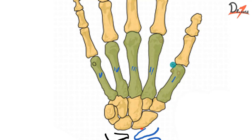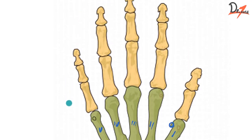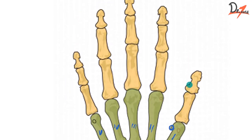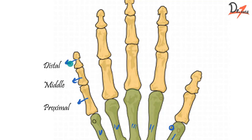Here you can see a little nodular bone — that is the sesamoid bone. The sesamoid bone is present in the tendons of the region, embedded in the tendons in the region of the thumb. Now moving on to the phalanges: except for the thumb, all fingers have three phalanges, while the thumb has just two. These can be categorized as the proximal, middle, and distal phalanges.